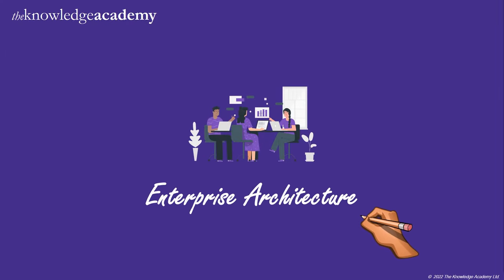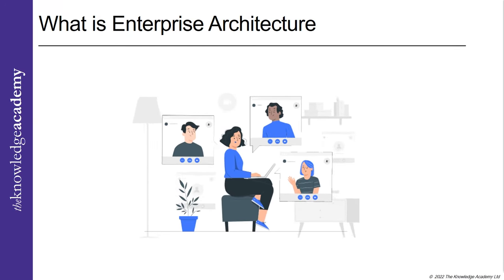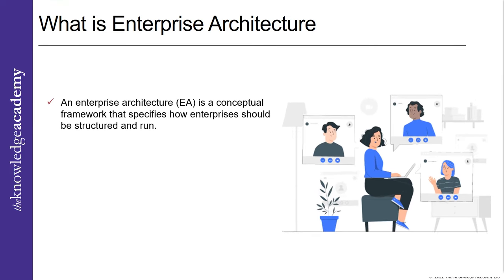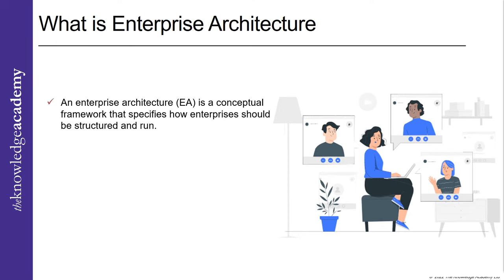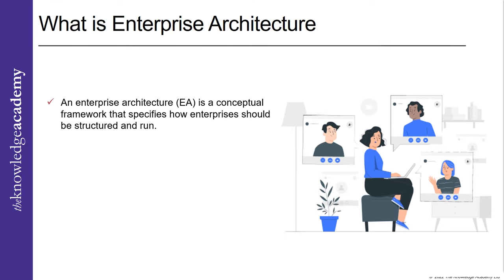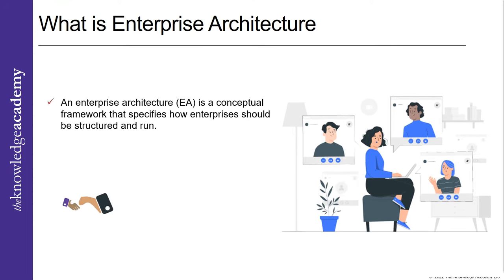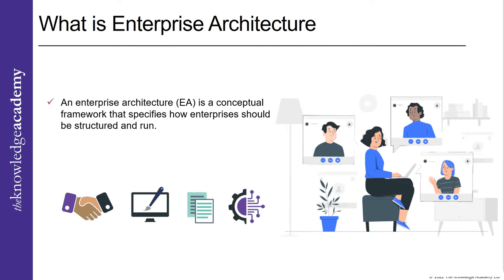Enterprise Architecture: An Enterprise Architecture, or EA, is a conceptual framework that specifies how enterprises should be structured and run. Enterprise Architecture can determine how a business can achieve its current and future objectives. It involves conducting, designing, planning, and implementing analysis for the successful development and execution of strategies in an enterprise.